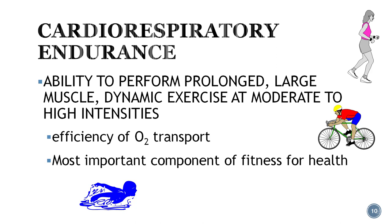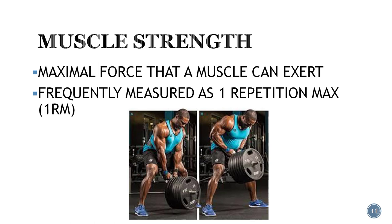The second component is muscular strength — the maximum force a muscle can produce with a single maximum effort. It is frequently measured as one repetition maximum, or 1RM. Muscular strength is specific to the exercise being done — for example, a squat or a bent-over row — and we measure the amount of weight in pounds or kilograms that you can do for only one repetition.